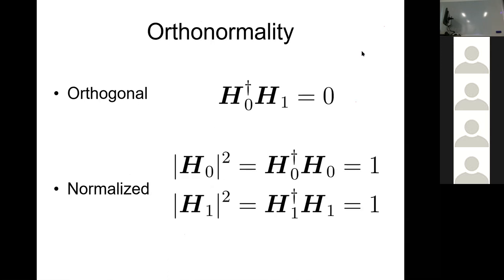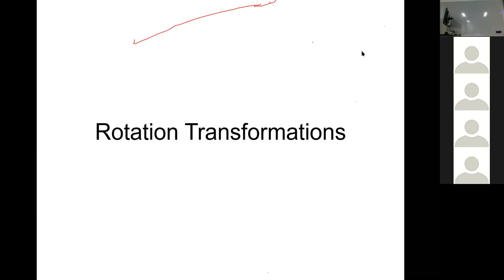Before I start, I'll define what is meant by orthonormality of the receptors. They are both orthogonal — so their inner product is zero — and they're normalized such that they have unit length, so you could put a little hat symbol on top of them.